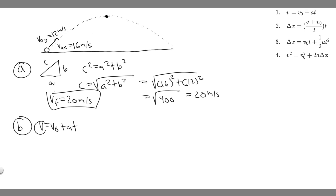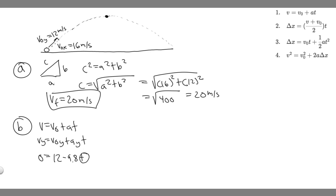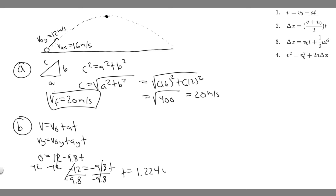The final velocity in Y is zero because we're at the maximum point. So: 0 equals 12 plus (−9.8) times t. Subtracting 12 from both sides gives −12 equals −9.8 times t. Dividing both sides by −9.8, we get t equals 12 divided by 9.8, which equals approximately 1.2244 seconds.